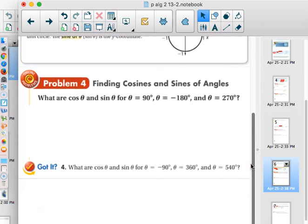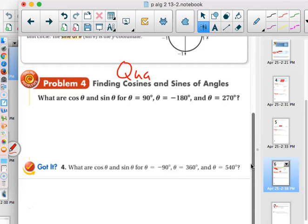So, this says, what are the cosine and sine of θ for θ equals 90°, θ equals -180°, and θ equals 270°? These are actually special. They are called, I'll use a capital Q here, quadrantal angles. And that's because they lie on either the x or the y axis. So, what they want us to do is think, well, what's going to happen if we need to find cosine and sine for these special angles?